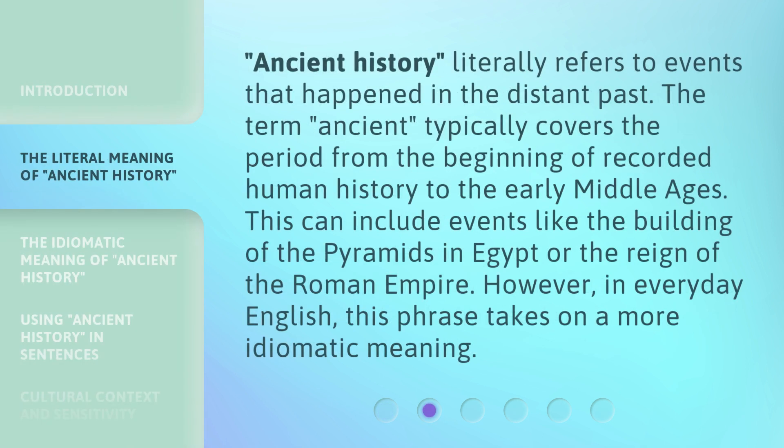Ancient History literally refers to events that happened in the distant past. The term 'Ancient' typically covers the period from the beginning of recorded human history to the early Middle Ages. This can include events like the building of the pyramids in Egypt or the reign of the Roman Empire. However, in everyday English, this phrase takes on a more idiomatic meaning.